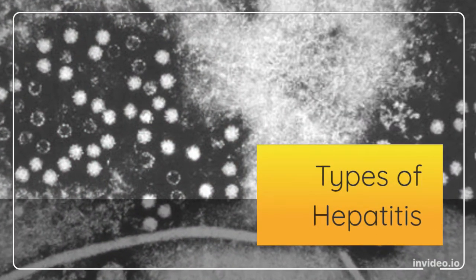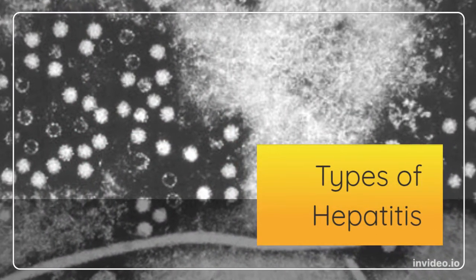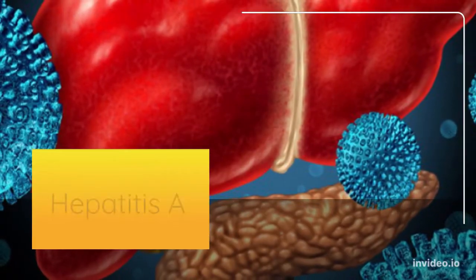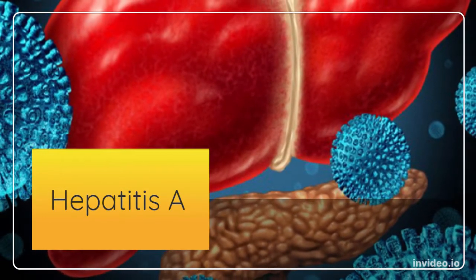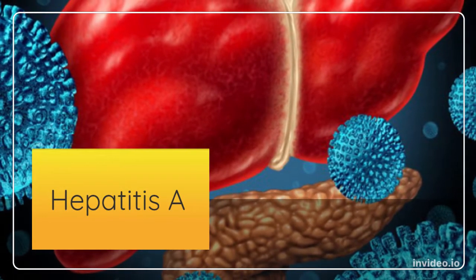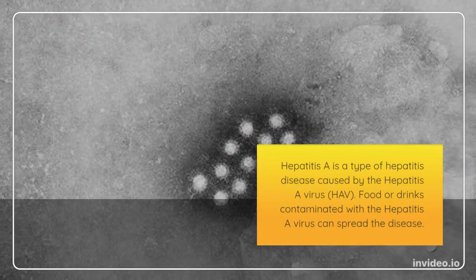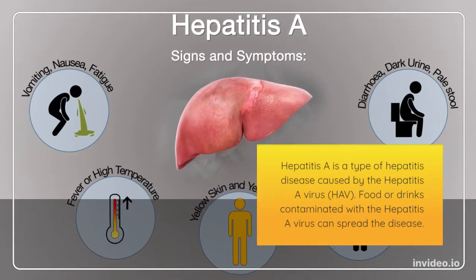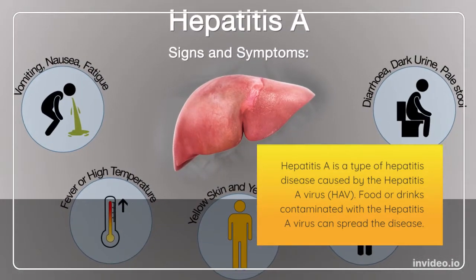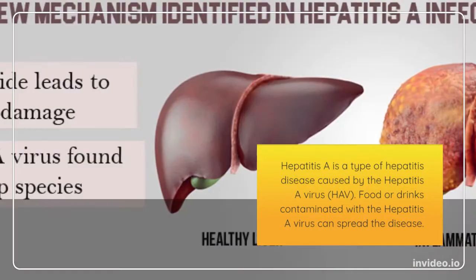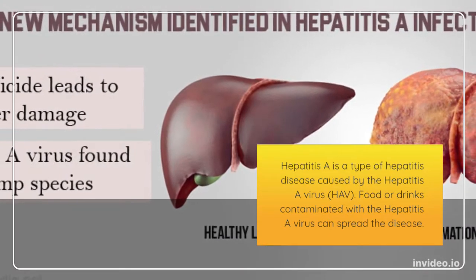Types of Hepatitis. Hepatitis A is a type of Hepatitis disease caused by the Hepatitis A virus, HAV. Food or drinks contaminated with the Hepatitis A virus can spread the disease.